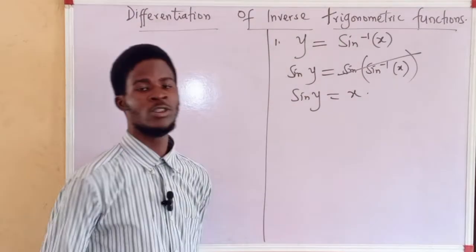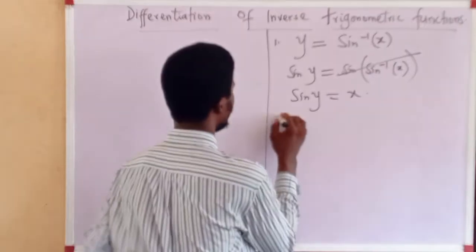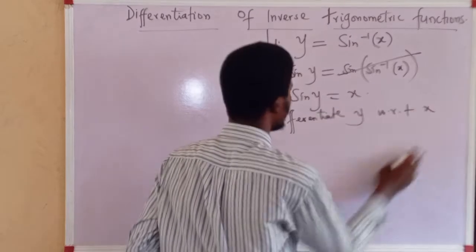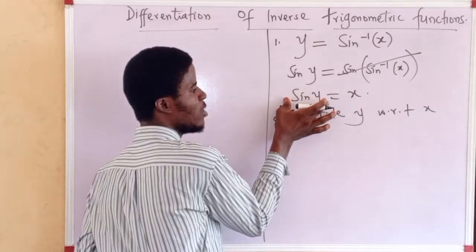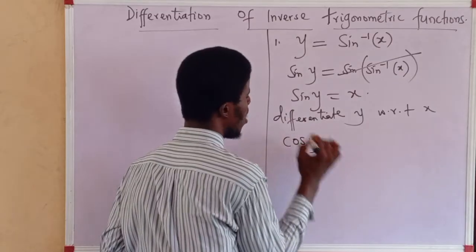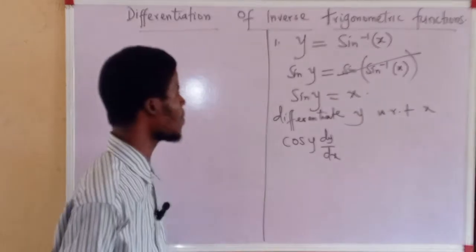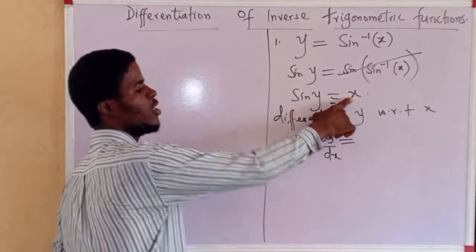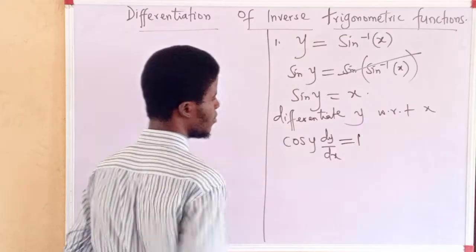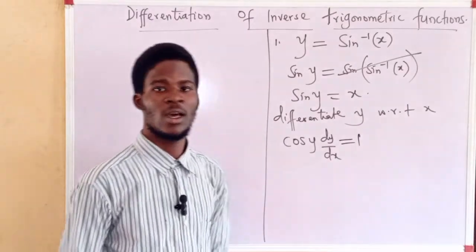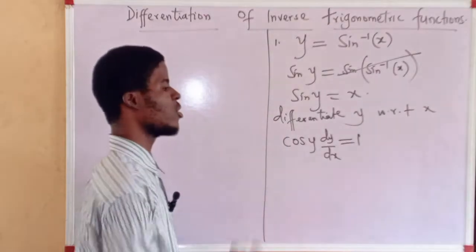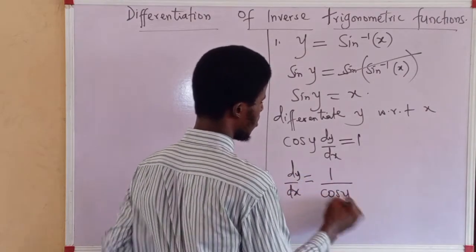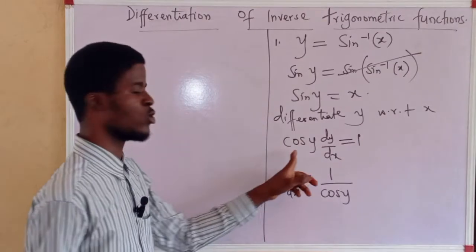Now I am going to differentiate y with respect to x. If I differentiate sine y with respect to x, I'm going to obtain cos y · dy/dx. Remember, differentiate the sine function to obtain a cosine function. Differentiating x with respect to x gives 1. So I'm going to make dy/dx the subject of the formula: dy/dx equals 1 over cos y. We divide both sides by cos y to obtain this.